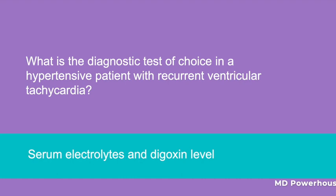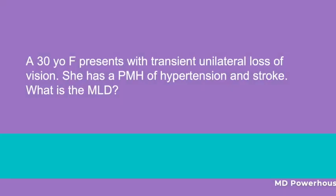A 30-year-old female presents with transient unilateral loss of vision. She has a past medical history of hypertension and stroke. What is the most likely diagnosis in this patient? Fibromuscular dysplasia.